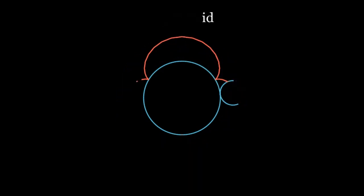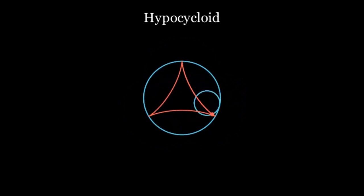Similarly, if the large ball was hollow on the inside and we let the smaller ball roll along the interior of the larger ball, we get a pattern known as a hypocycloid.